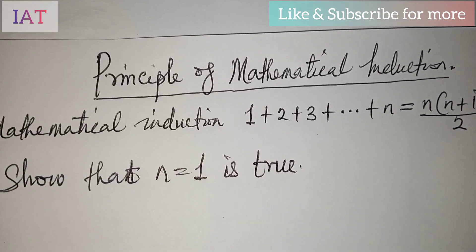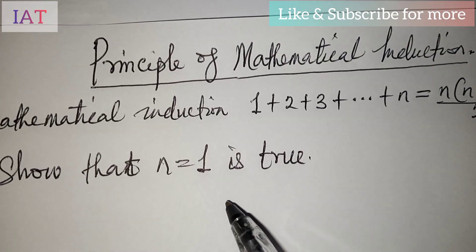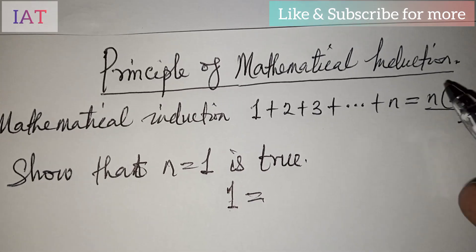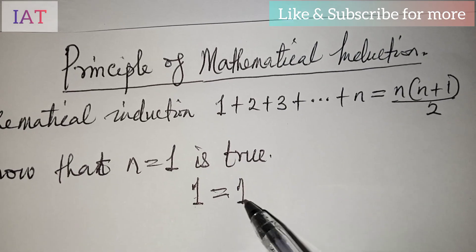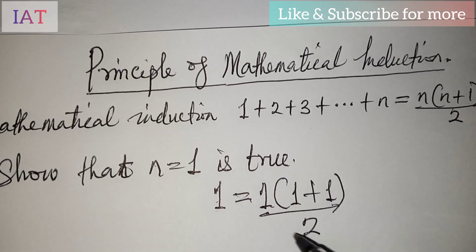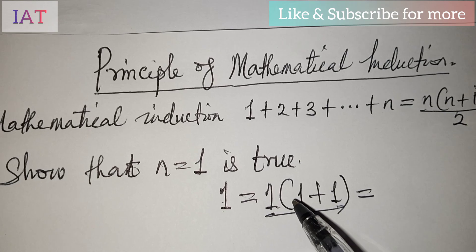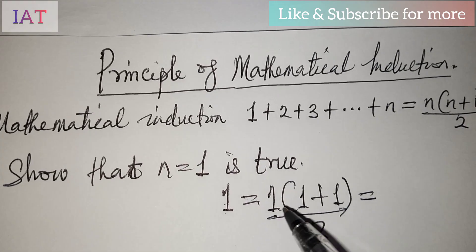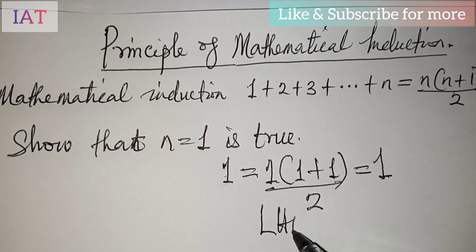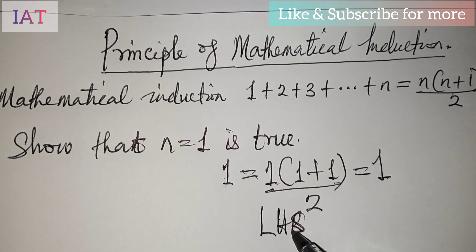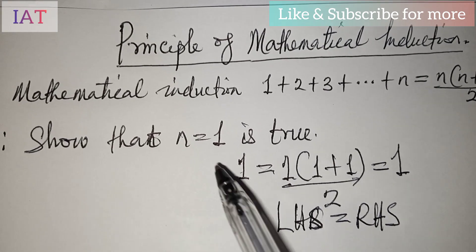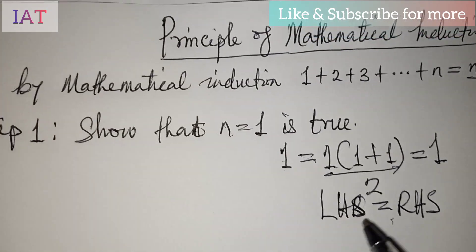From the left hand side, we replace n with one, giving us one. From the right hand side we have one times (one plus one) all over two. One plus one in the bracket is two, two multiplied by one is two, divided by two gives us one. The left hand side equals the right hand side, so n equals one is true.